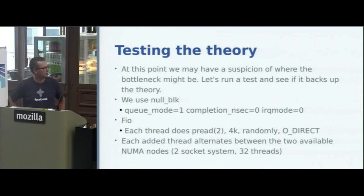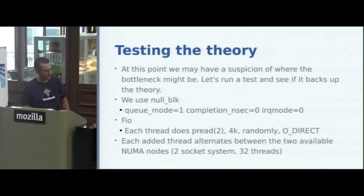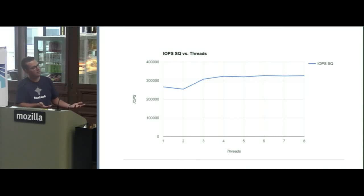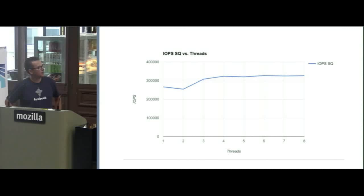This particular system had two NUMA nodes, a two-socket system with 32 threads. For each thread added, we start with one thread on node zero, then add one on node one, alternating between nodes. The initial performance of one thread is around 260k IOPS. Adding one more thread actually gives us slower performance, because now we're running on both NUMA nodes — we're throwing things between the two sockets, which slows things down. As we add more threads, we hover around 310k IOPS but don't see any sort of linear scaling.